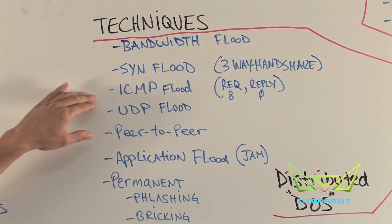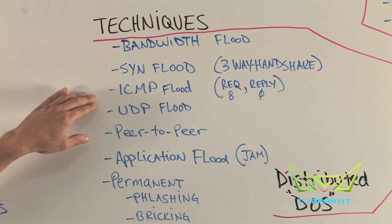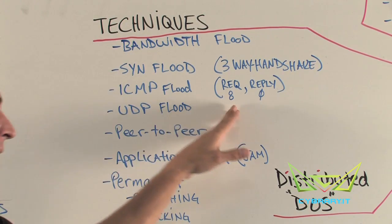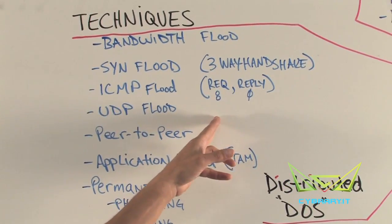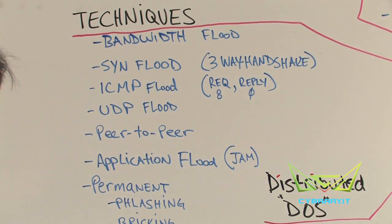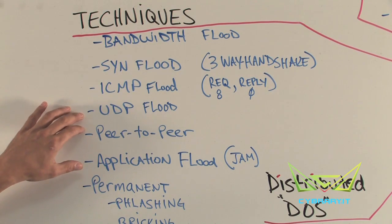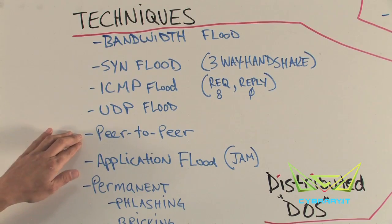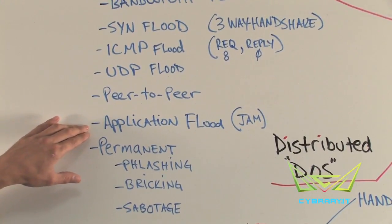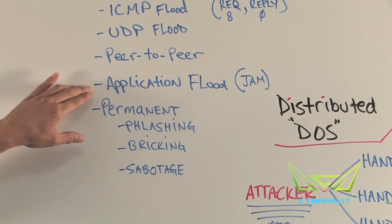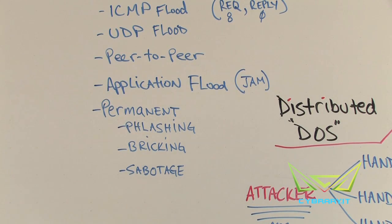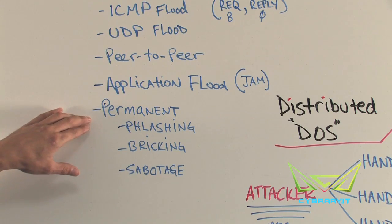If SYN flooding doesn't work, you can switch down to Layer 3 and use ICMP flooding — sending a large volume of ICMP packets from a variety of sources. When we ping something we send a Type 8 echo request and get a Type 0 echo reply back; you can manipulate those packets to overwhelm a target. UDP flooding is another option — just switch your protocol again. Attacks can also come from peer-to-peer networks or target application protocols like HTTP or PHP, which have been known to be extremely vulnerable.